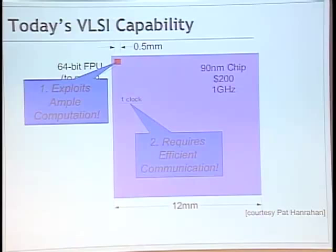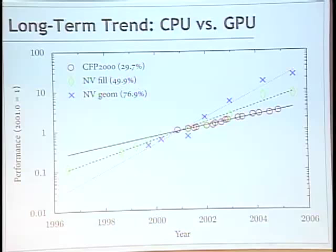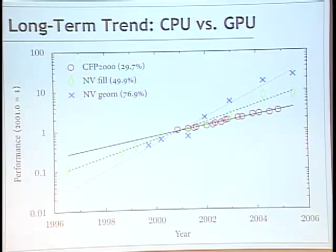One good thing about GPUs is they do a nice job of riding these technology trends. Looking at Pentium 4 numbers from roughly 2000–2005, they're going up 30% a year in floating point benchmarks. But GPUs are doing better because they have a more parallel programming model. We see faster long-term growth in both fill rate (fragments per second) and geometry rate (vertices per second). Because GPUs scale well and have a model that lends itself to expanding parallelism, this is a good long-term trend.